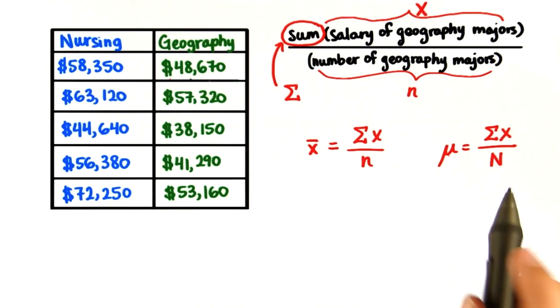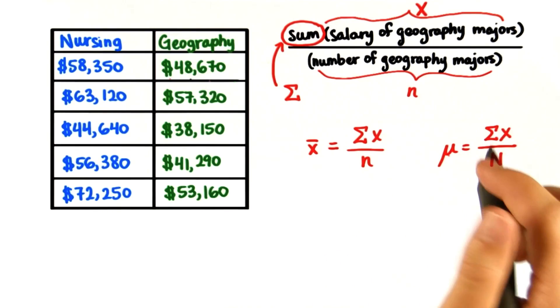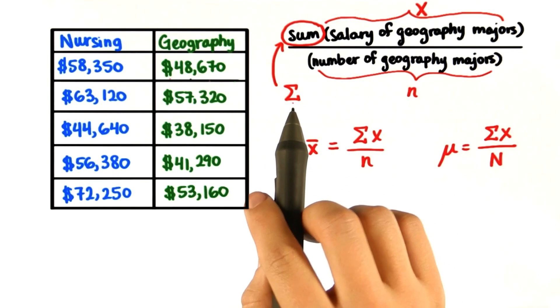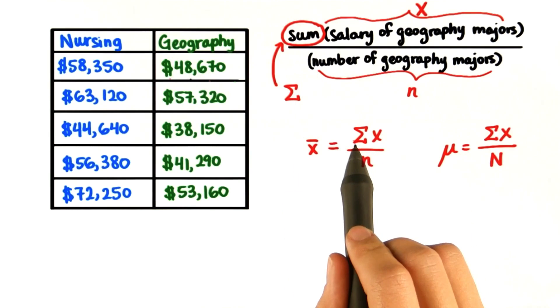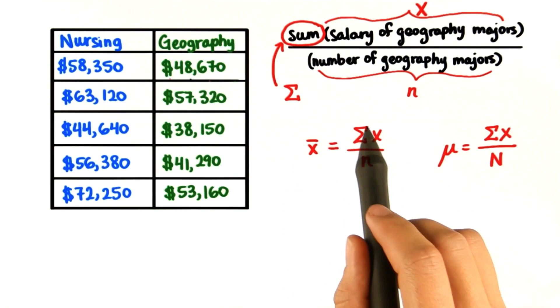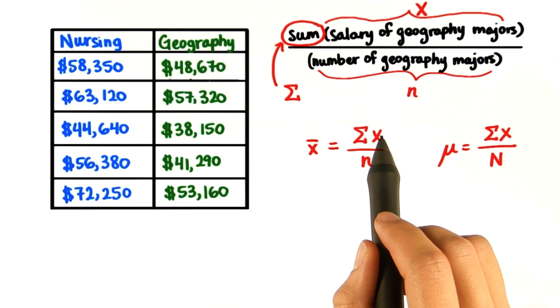Now, this might look Greek to you. Well, it is. Sigma is the Greek capital letter S, which makes sense because it means sum. When you see sigma and then x, this is telling you to add everything that comes after the sigma.